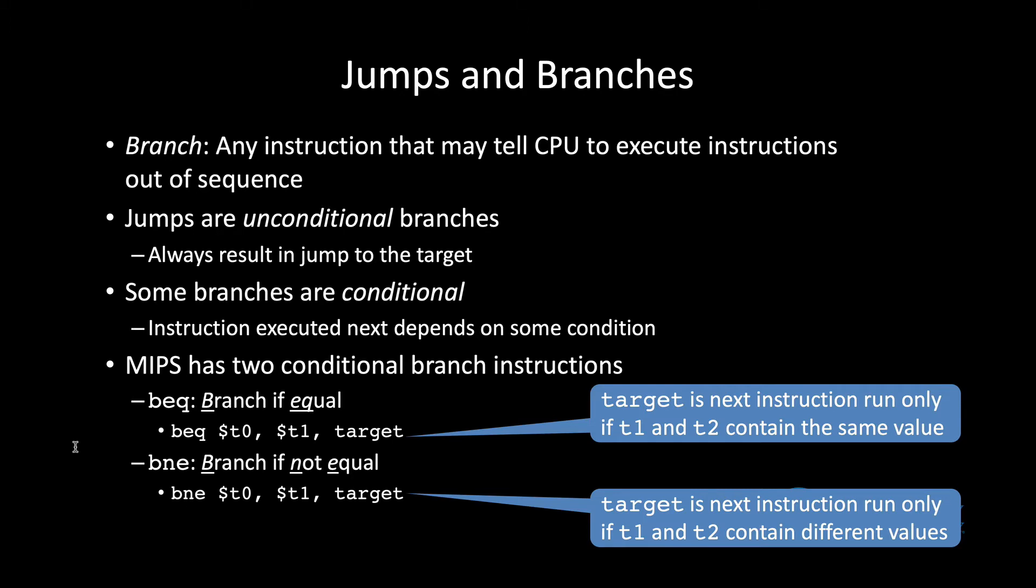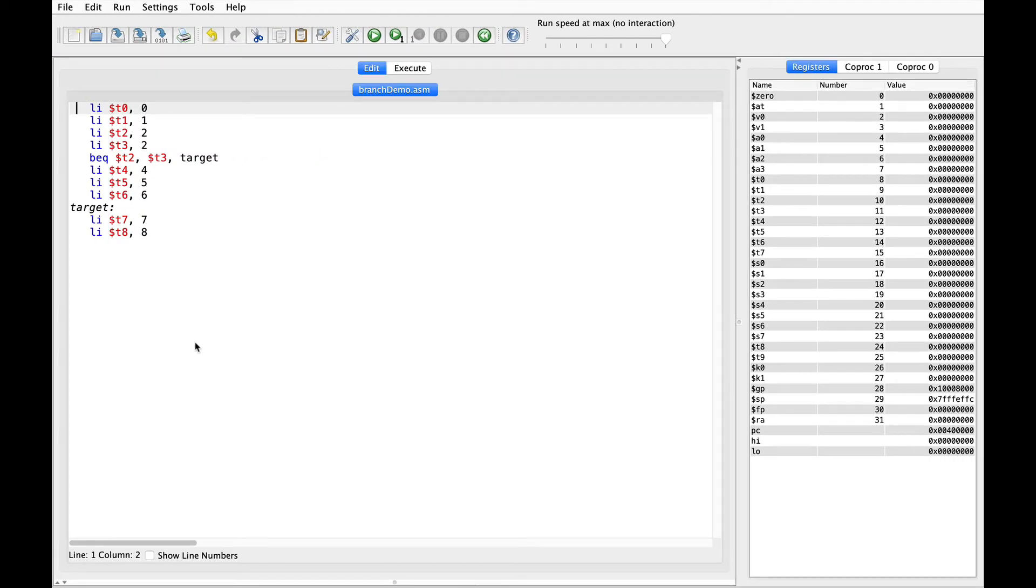So let's quickly look at some assembly code with branches in it. Just like the example with the jumps, we mostly have instructions that initialize registers to a constant value. And then we have this branch instruction. The idea is if T2 and T3 contain the same value, we'll jump down to the target. We'll skip setting 4, 5, and 6 and go to 7, 8.